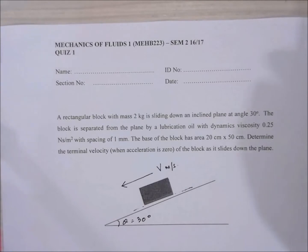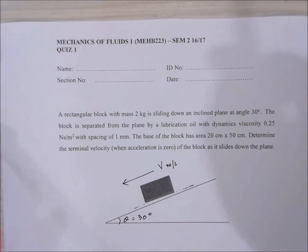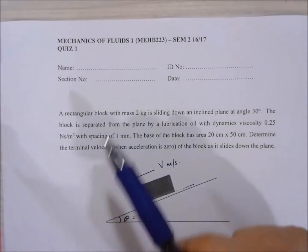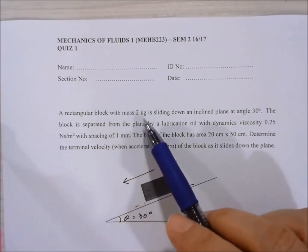This question is related to viscosity in moving fluid. So here we have a rectangular block with a mass of 2 kg, sliding down an inclined plane at an angle of 30 degrees to the horizontal.